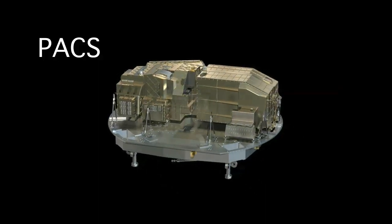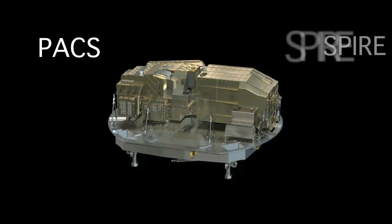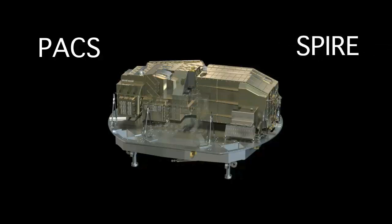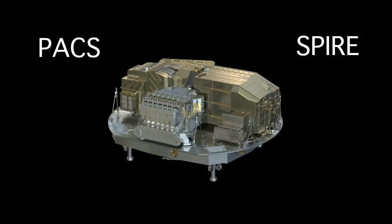The spectral and photometric imaging receiver, or SPIRE, is designed to exploit wavelengths that have never been studied before. It is a color camera and spectrometer and can study the history of star formation in the universe.